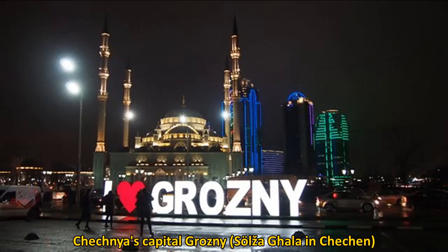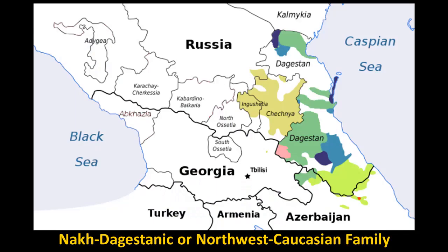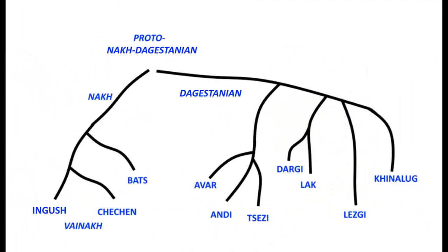On this map we see the modern Nakh-Dagestanic languages. You can see Chechen and Ingush, which are very closely related, and the more distantly related languages of Dagestan. In the language family diagram, there is a Nakh branch that gives us the Bats language — spoken by only a few thousand people — as well as the Ingush language and the Chechen language, which together form the Vainakh group within Nakh.